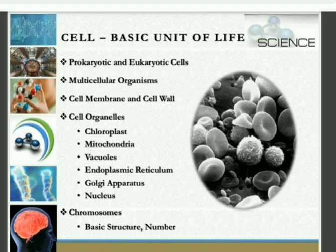Here I am giving you just an introduction. Then we have multicellular organisms — organisms which are made up of many cells, like human beings. We will study cell membrane, cell wall, and different types of cell organelles — that is, cell parts — including chloroplast, mitochondria, vacuoles, endoplasmic reticulum, Golgi apparatus, and nucleus. Inside the nucleus we will read about chromosomes, their basic structures and numbers.